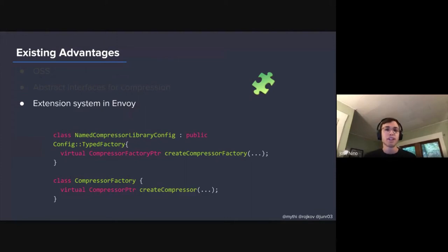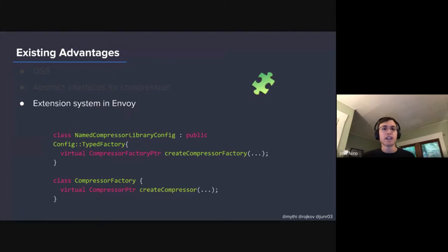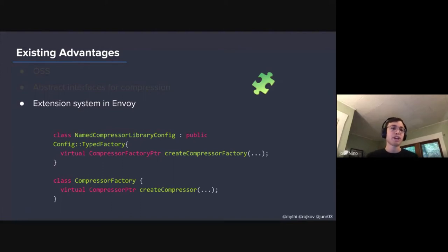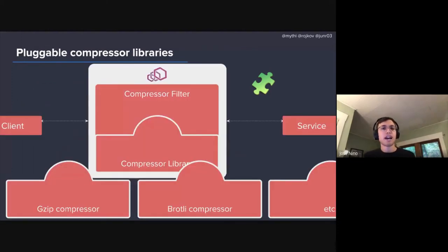So there was a very clear delineation of where we could divide the filter and plug in a compressor library, regardless of the compression algorithm it used. Now that we had this generic compressor working within the generic HTTP compressor filter, we could raise the compressor itself to be a first class extension in Envoy. This is done using classes where we have a class that derives from the config type factory class, and then every particular implementation of a compressor library derives from that in turn.